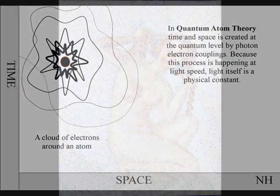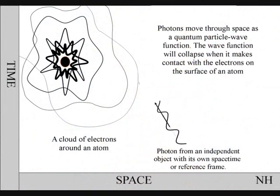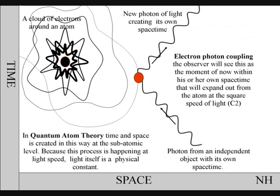In quantum atom theory, atoms create their own time out of nothing more than photons of light and electrons. When a photon comes in contact with an electron on the surface of an atom, there is a photon-electron coupling.